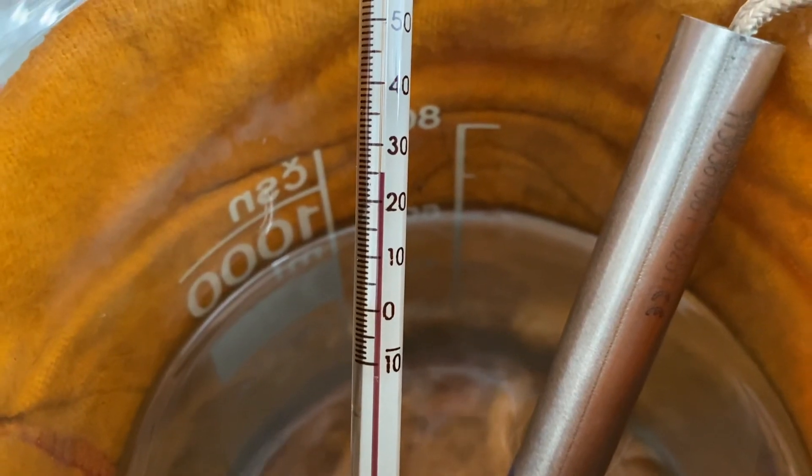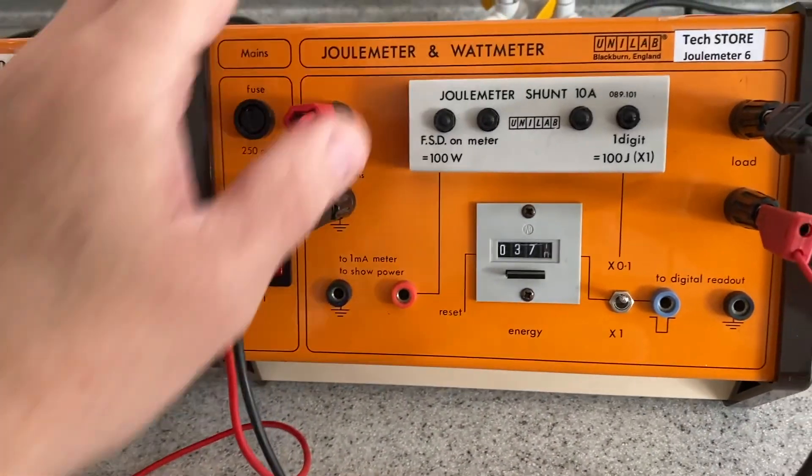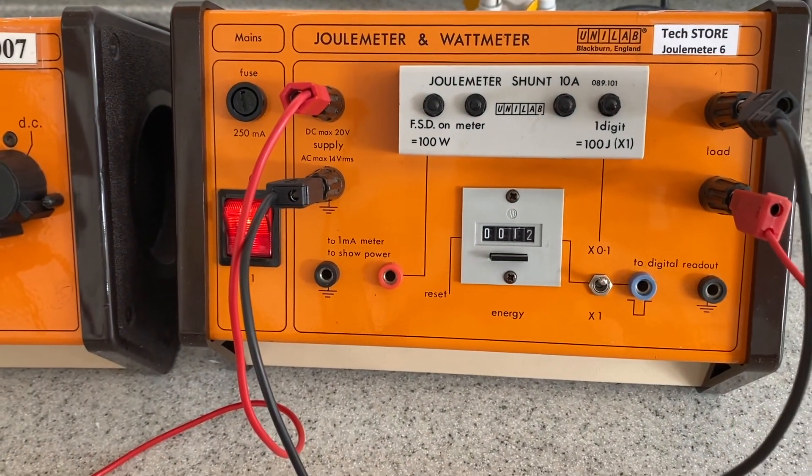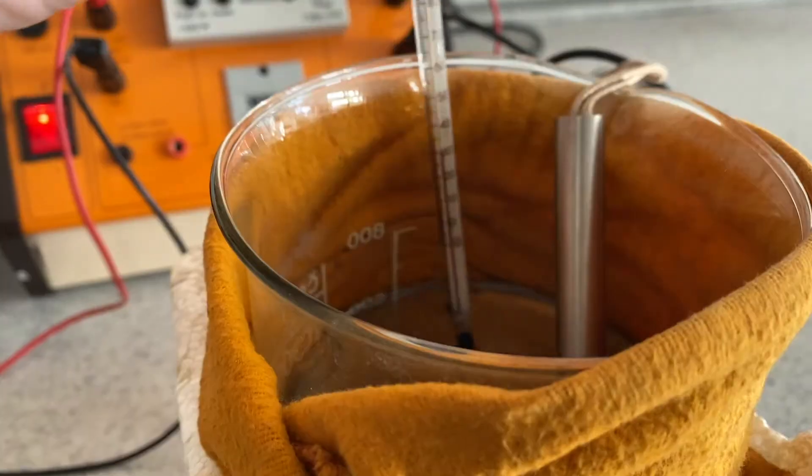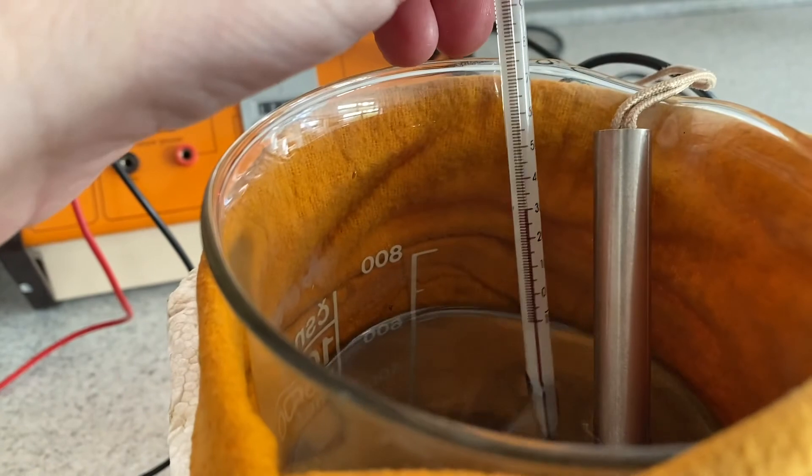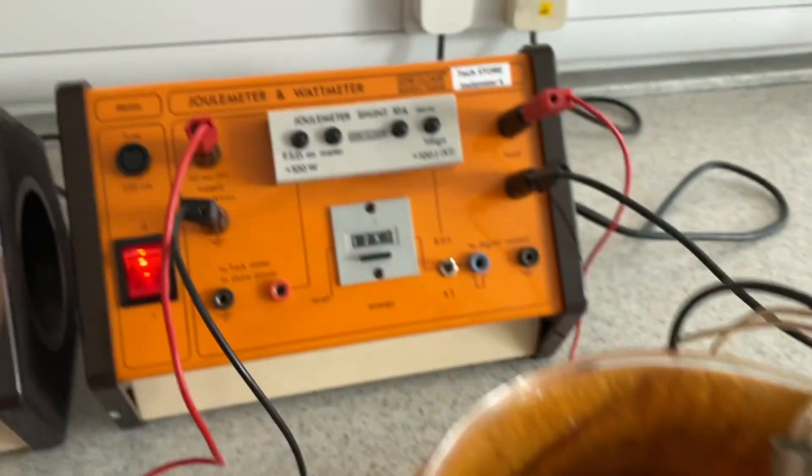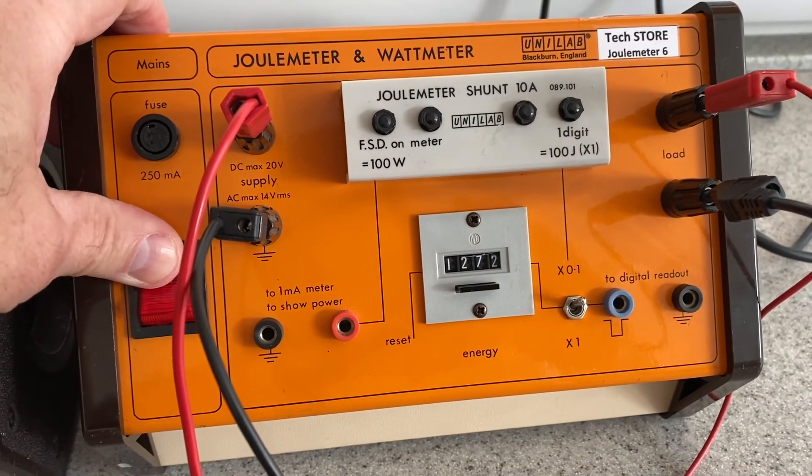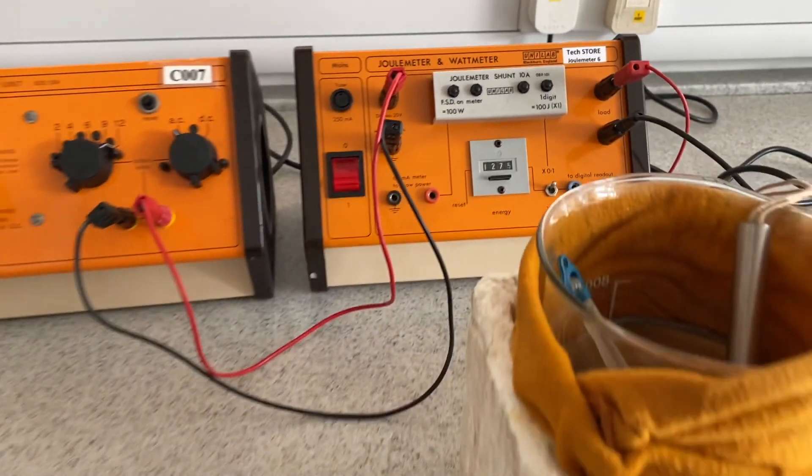So here we go. We're at 25. Let's reset the heater. And we are going to measure how much heat energy is required to raise the temperature of the water by 5 degrees. Now we should really be stirring the water as well, make sure the heat is distributed well throughout. And now at 30 degrees. Let's stop the heater. Remember each unit is 10 joules. So stop. That is 12,750. Let's do some maths.